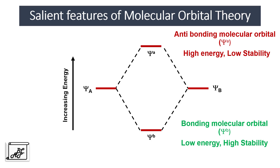When two atomic orbitals combine, two molecular orbitals are formed — one bonding and one antibonding. If three atomic orbitals overlap, three molecular orbitals are formed: one bonding, one antibonding, and one non-bonding. If four atomic orbitals combine, four molecular orbitals are formed — two bonding and two antibonding. In general, if n atomic orbitals overlap, n molecular orbitals are formed, of which half are bonding and half are antibonding.